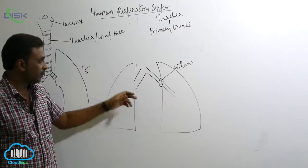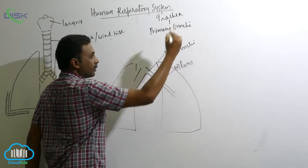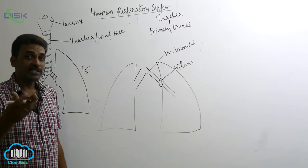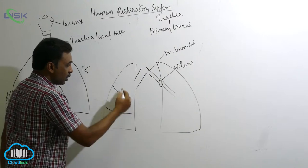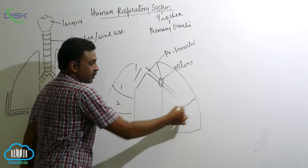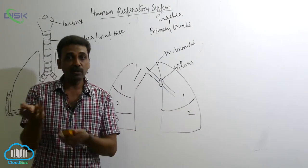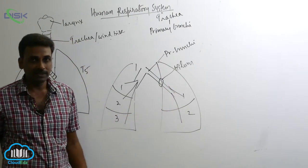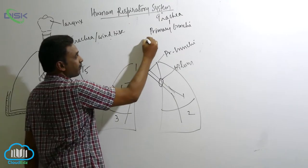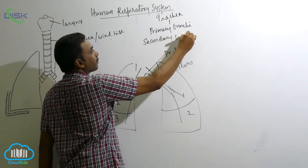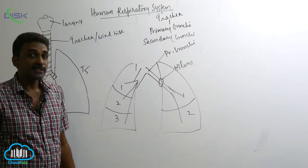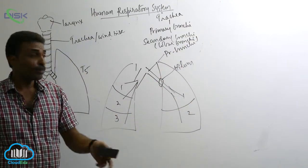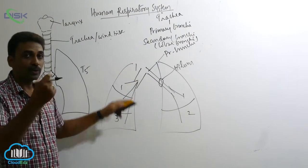After entering the lungs, the primary bronchi divide into secondary bronchi. The number of secondary bronchi depends on the number of lobes — three lobes on the right lung and two lobes on the left lung. The secondary bronchi are also called lobar bronchi, because each secondary bronchus goes to one lobe of the lung.